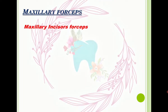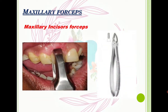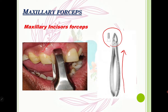Now let's check maxillary forceps. First, the maxillary incisors forceps — they have a straight handle and a working part that we apply to the tooth. You can see here how we are applying the forceps and starting the extraction.